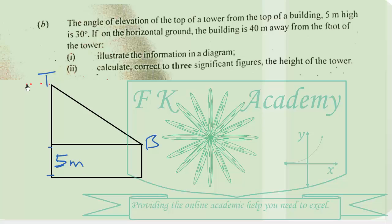Let the height of the tower be H meters. Then this portion will be H minus 5 meters. We are also given that this is 40 meters, because it is 40 meters away from the foot of the tower. Then the angle of elevation is 30 degrees.